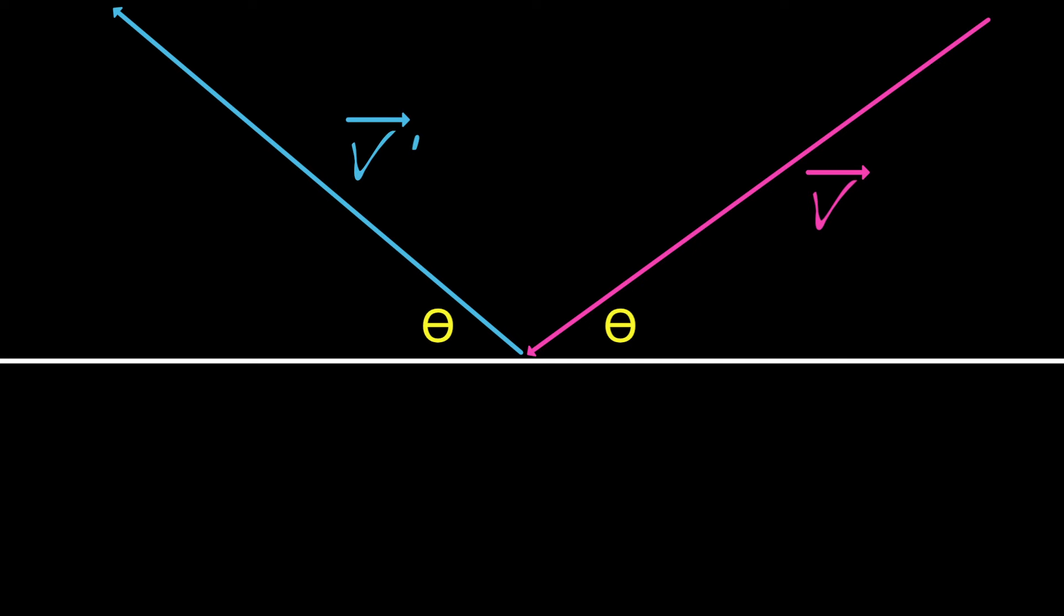To compute v prime from v, let's write v as the sum of two vectors: a velocity parallel to the floor, v parallel, and a velocity perpendicular to the floor, v perpendicular.